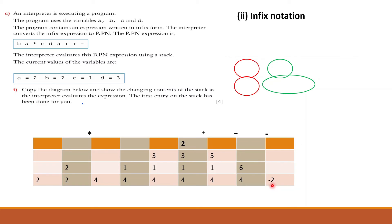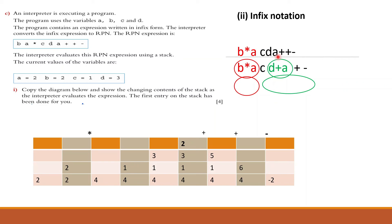Now let's see how we can write this RPN expression using infix notation. Moving from left to right, the moment I encounter the multiplication sign, I put it between the last two preceding operands — so it becomes B multiplied by A. This part is now solved. Moving on, I see C, D, A, and the moment I encounter the first plus operator, I put it in the middle of the last two preceding operands — so plus goes between D and A.